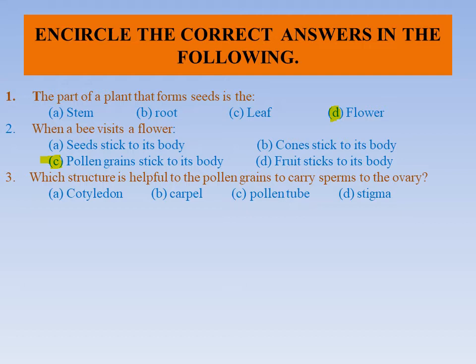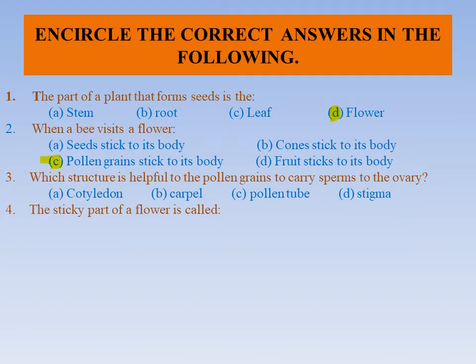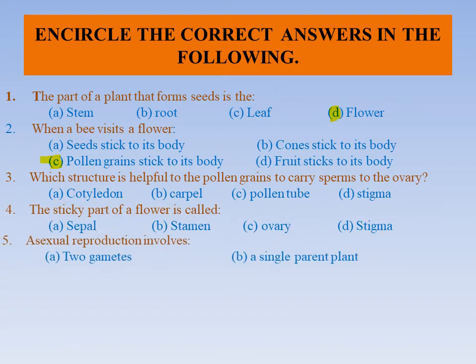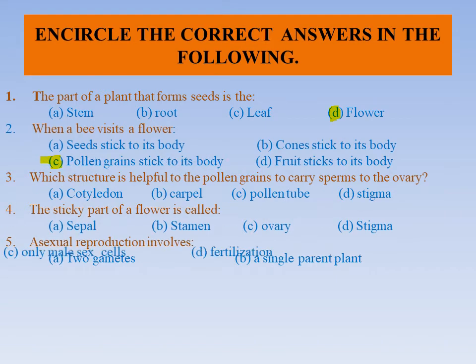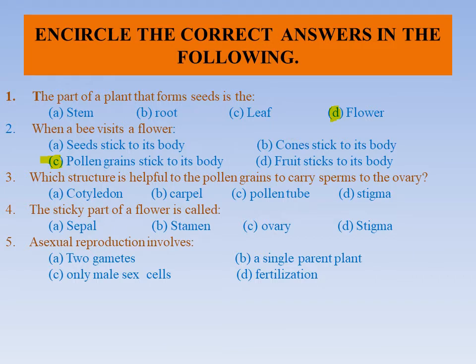Which structure is helpful to the pollen grains to carry sperm to the ovary? The options are cotyledon, carpel, pollen tube, or stigma. Your answer is pollen tube. The pollen tube basically helps the pollen grains to carry over to the ovary. So option C is correct.